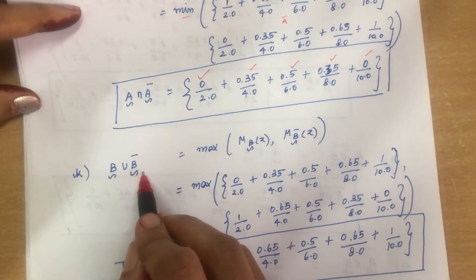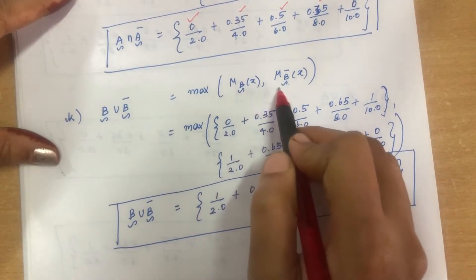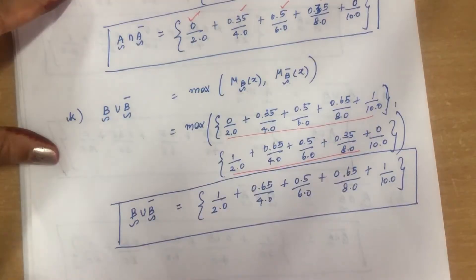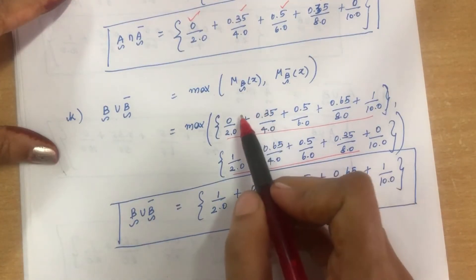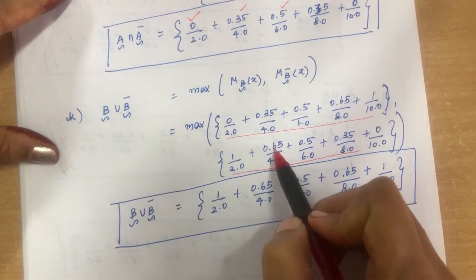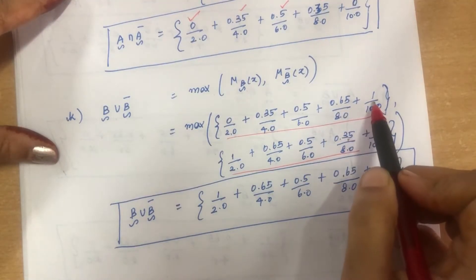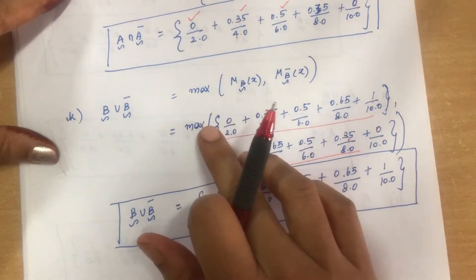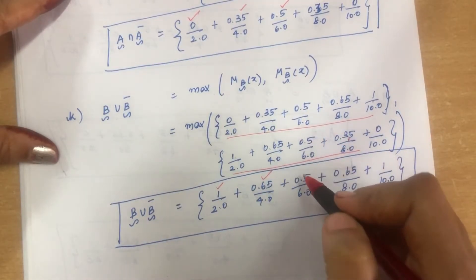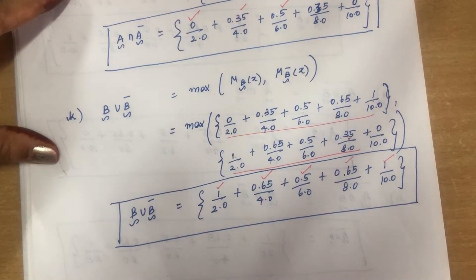For B union B bar, we take maximum of membership value of B and B complement. B bar values: 1−0=1, 1−0.35=0.65, 1−0.5=0.5, 1−0.65=0.35, 1−1=0. Taking the maximum: max(0,1)=1, max(0.35,0.65)=0.65, max(0.5,0.5)=0.5, max(0.65,0.35)=0.65, max(1,0)=1.